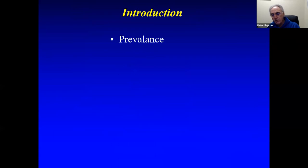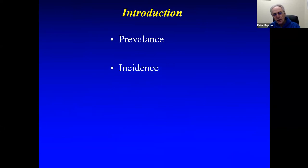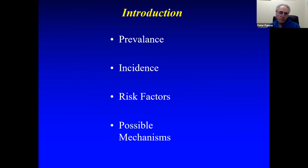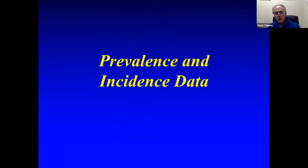We're going to be talking about prevalence — the actual number of patients who have the disease in the general population — and incidence, the number of new patients per year. Risk factors are the things associated with, if not directly contributing to, the development and progression of disease. We'll also speculate about some of the possible mechanisms.